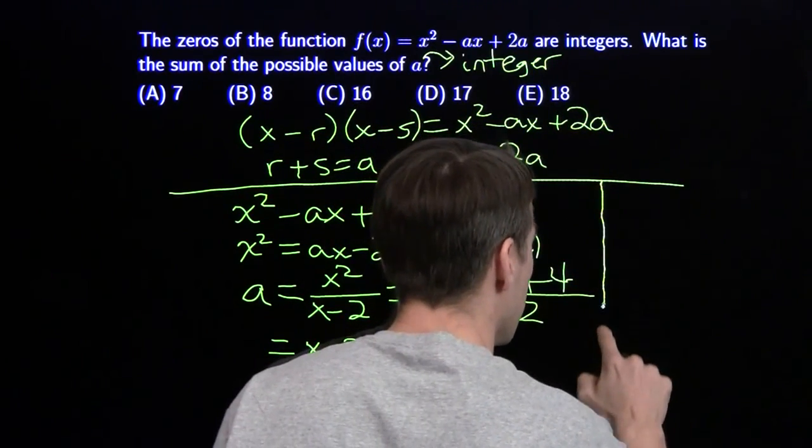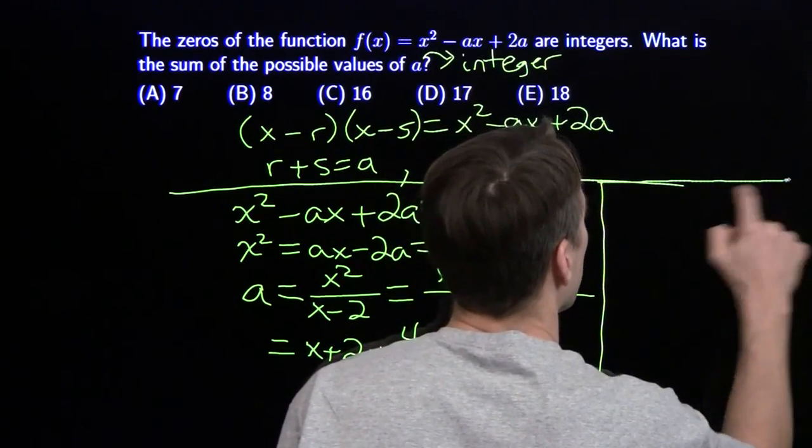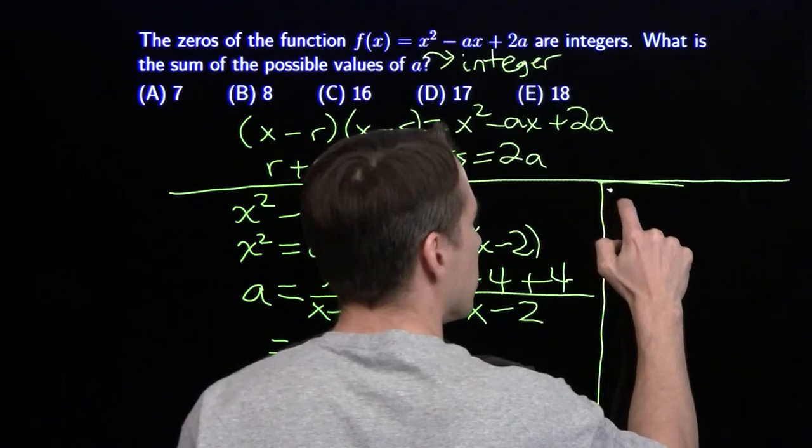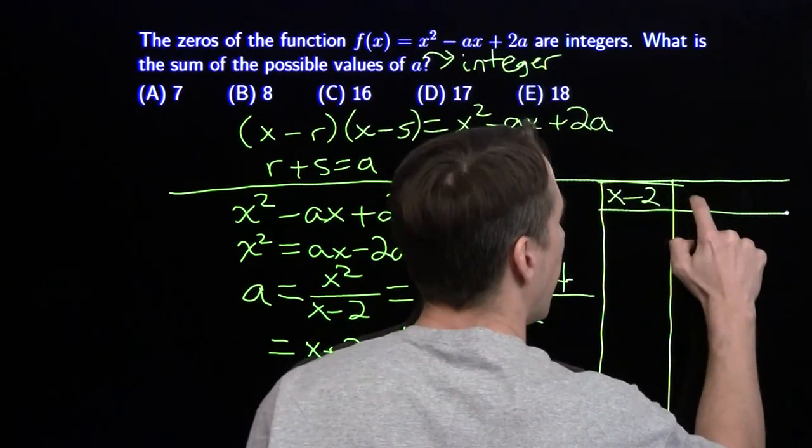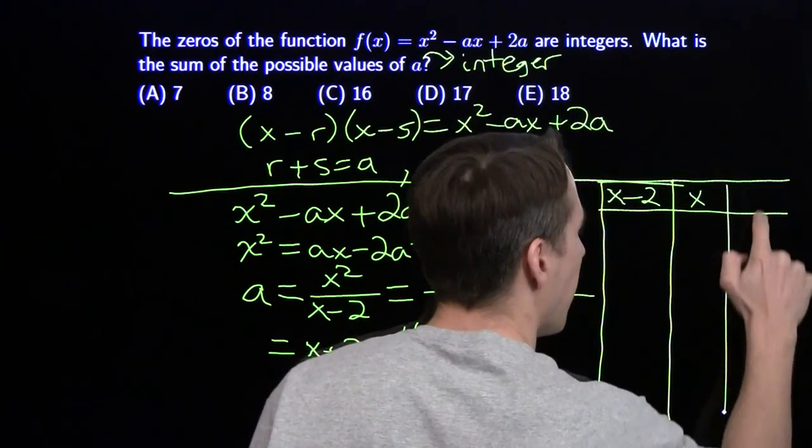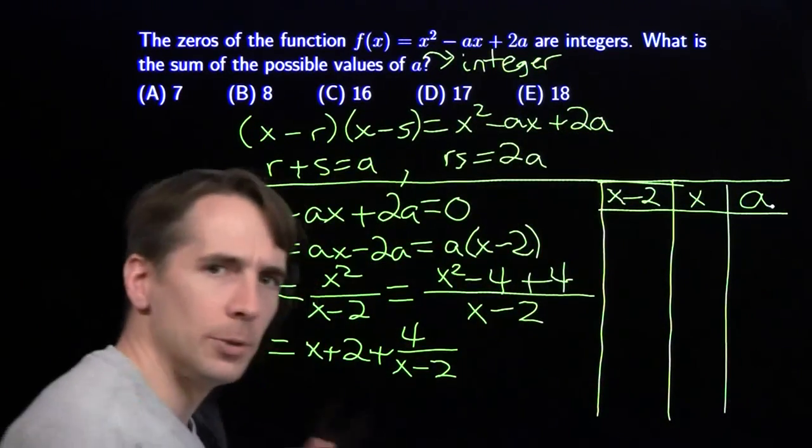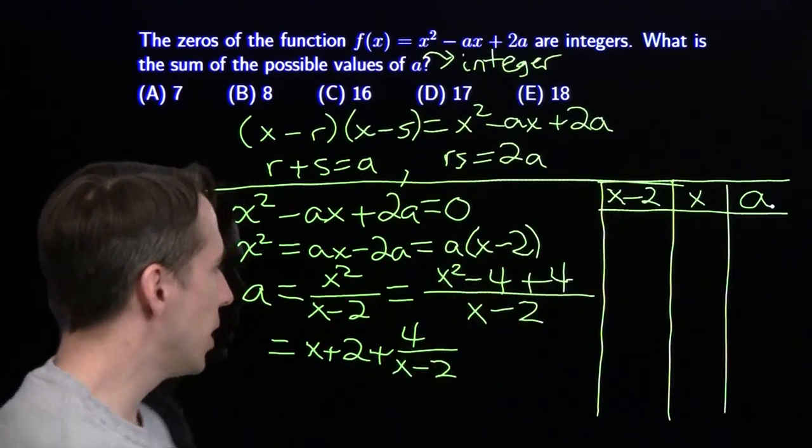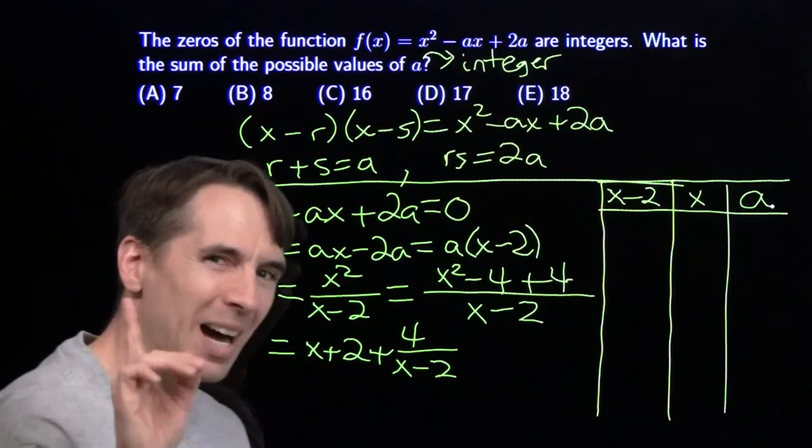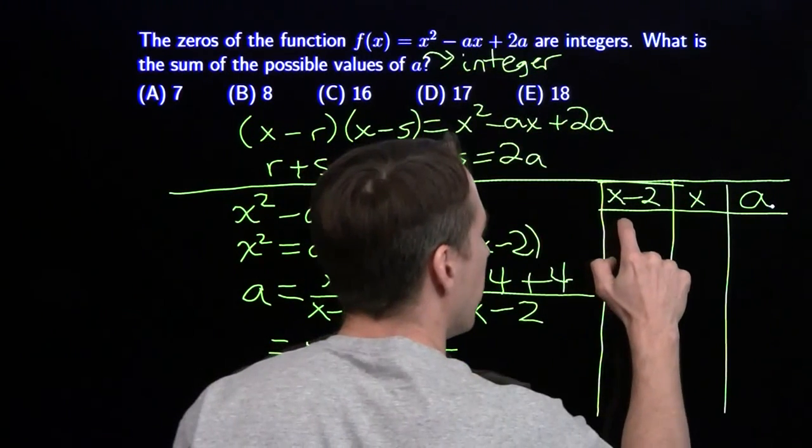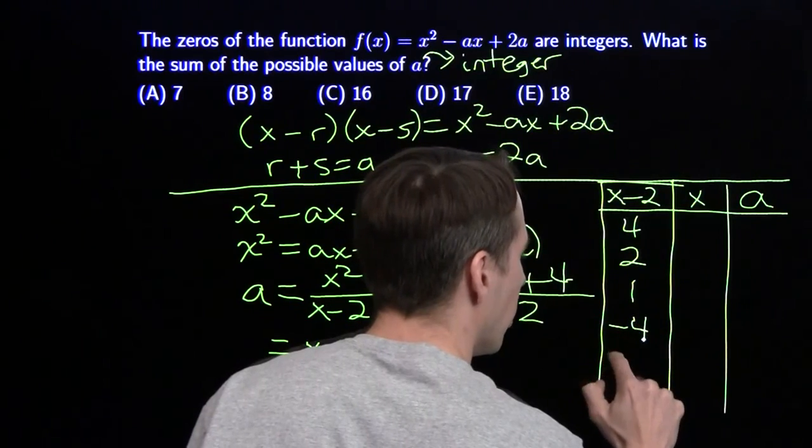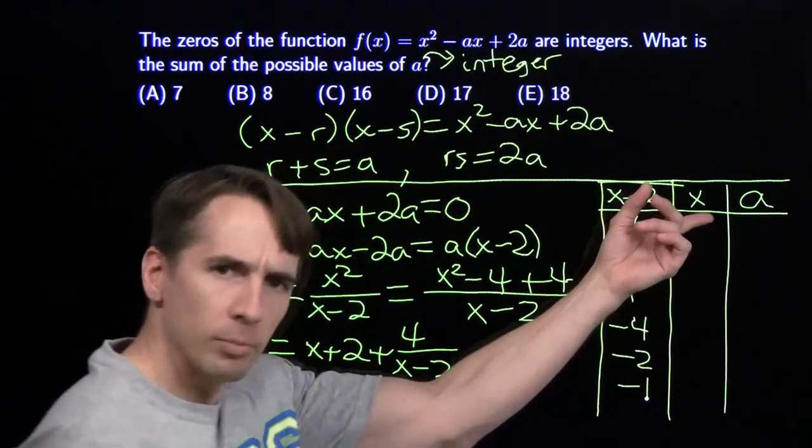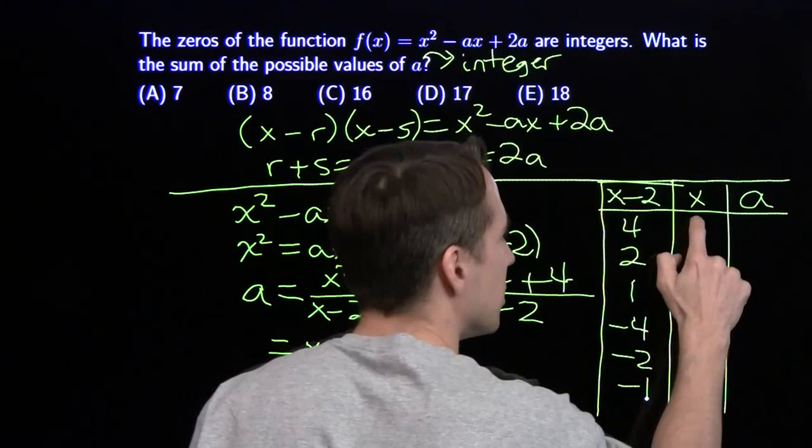Let's be organized. We have x - 2 dividing into 4. We'll look at possible values of x - 2, back out x, and deduce a. The factors of 4 positive and negative are: 4, 2, 1, -4, -2, and -1.